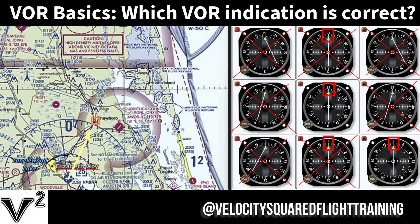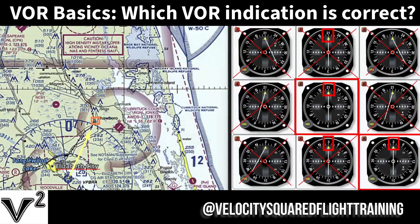So we actually only have two options left — either number 5 or number 9. The FAA knowledge test gives A, B, and C options, and you'll only be able to choose one of those two. For example, if the choices are A=2, B=8, C=9, you know you can't choose 5, so choose 9. You know you're on course, on the 030 radial from the VOR, which makes sense because the 030 radial comes out from the VOR to Shawboro. Your answer is 9.